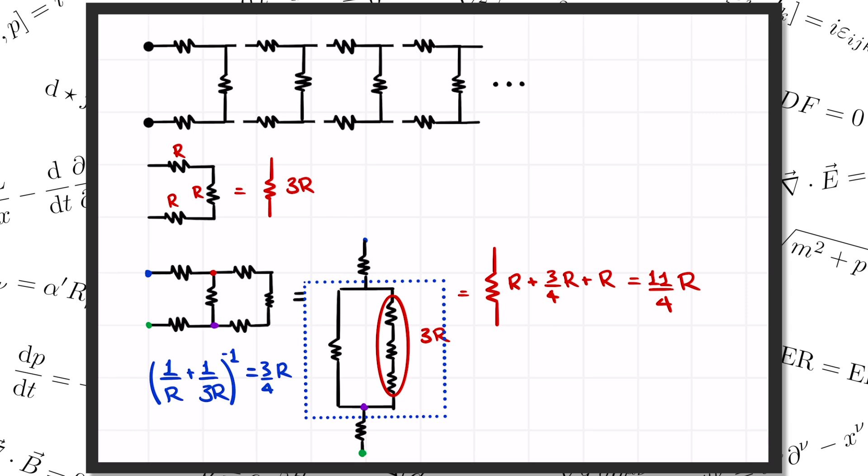Alright, so we've got 1 block and 2 blocks down pat. But how do we get from 2 all the way to infinity? Well, let's let R sub n denote the effective resistance of an n-block ladder. So in other words, what we've found so far is R sub 1 equals 3R, and R sub 2 equals 11 quarters R.